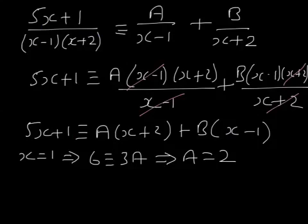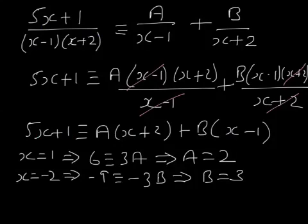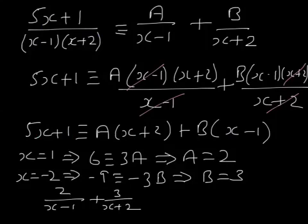What's going to make the A term equal to 0? Minus 2 is. So let's choose x equals minus 2. Minus 2 times 5 is minus 10, plus 1 is minus 9. So minus 9 is equivalent to that term being 0, then minus 2 minus 1 is minus 3, so it's minus 3B, which means B equals 3. Therefore 5x plus 1 over (x minus 1)(x plus 2) equals 2 over (x minus 1) plus 3 over (x plus 2). And that's the answer.